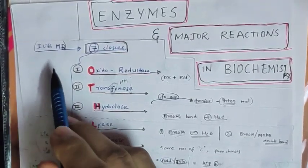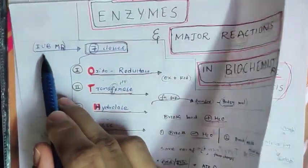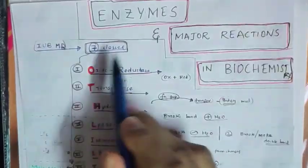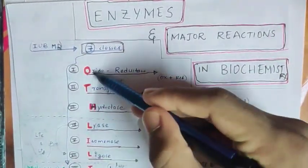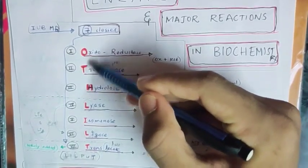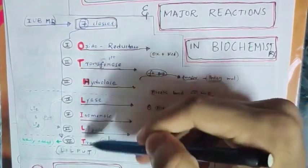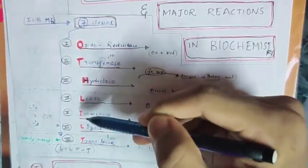Let us go into the topic. International Union of Biochemistry and Molecular Biology classified the enzymes into seven major classes. You should remember these classes in the same order, don't change the order. To remember this, you can remember like OT LILT.